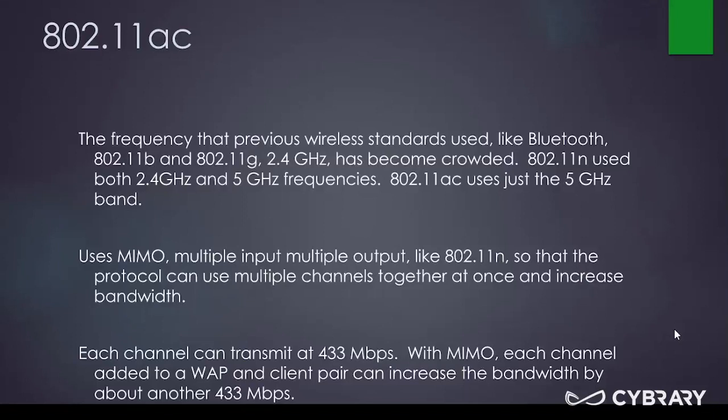Starting with 802.11n, wireless started using both the 2.4 gigahertz and the 5 gigahertz frequency. The last time we saw 5 gigahertz used for Wi-Fi was with the 802.11a standard. Now, with 802.11ac, 5 gigahertz is making a comeback — 802.11ac uses just the 5 gigahertz band.